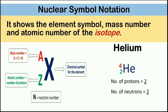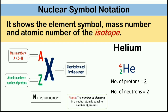So what about the number of electrons? How can we get the number of electrons? Note: the number of electrons in a neutral atom is equal to the number of protons. In this example, the number of protons is 2. Therefore, the number of electrons is 2.